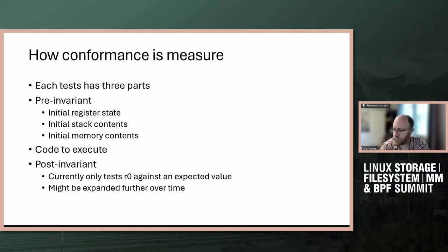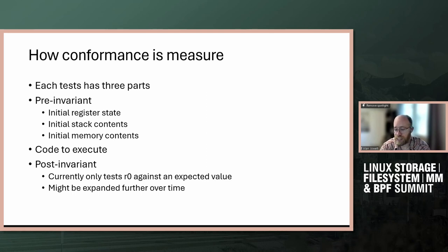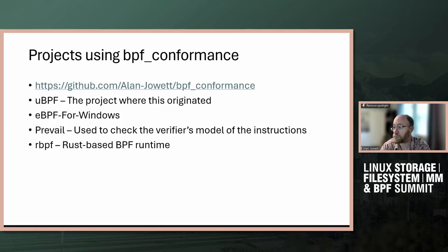The last part is a set of post-invariants. Currently we only check R0 against the return value, but the goal longer term is to have more extensive post-invariants, making it easier for people writing tests to validate particular ISA instructions.